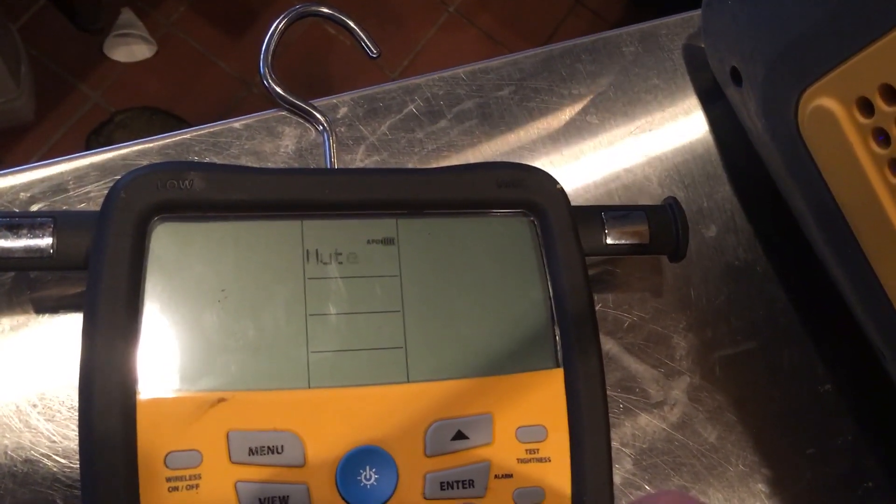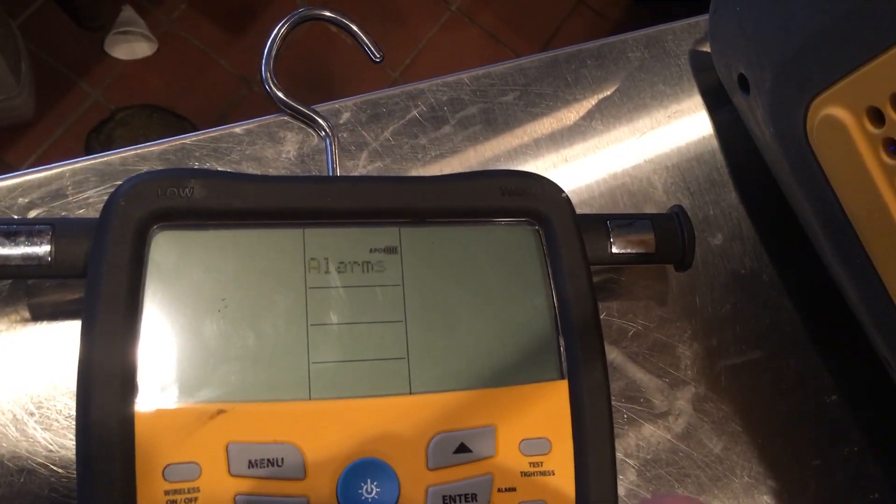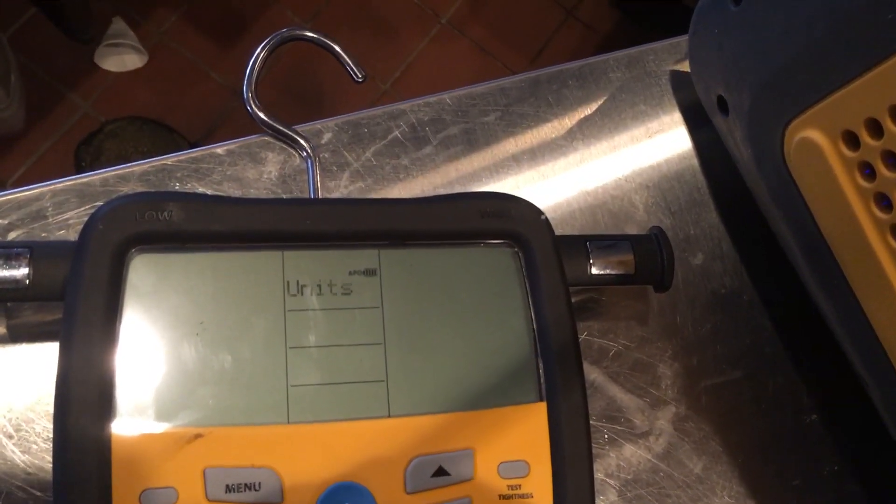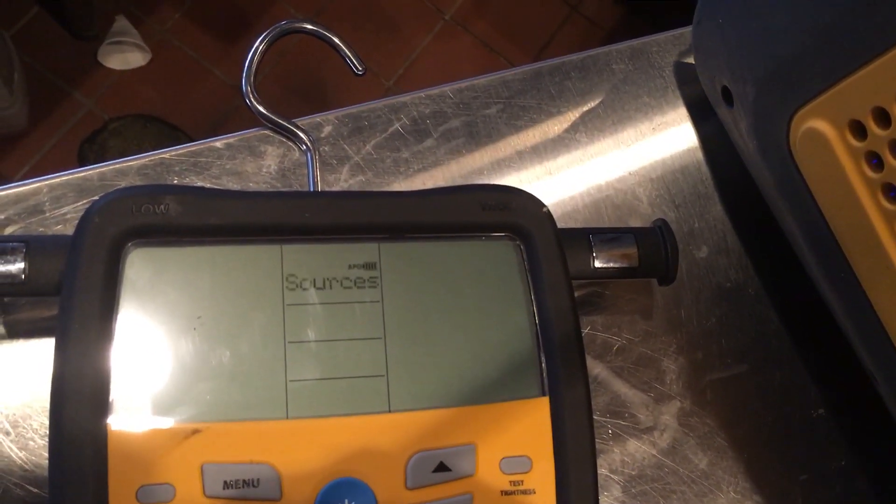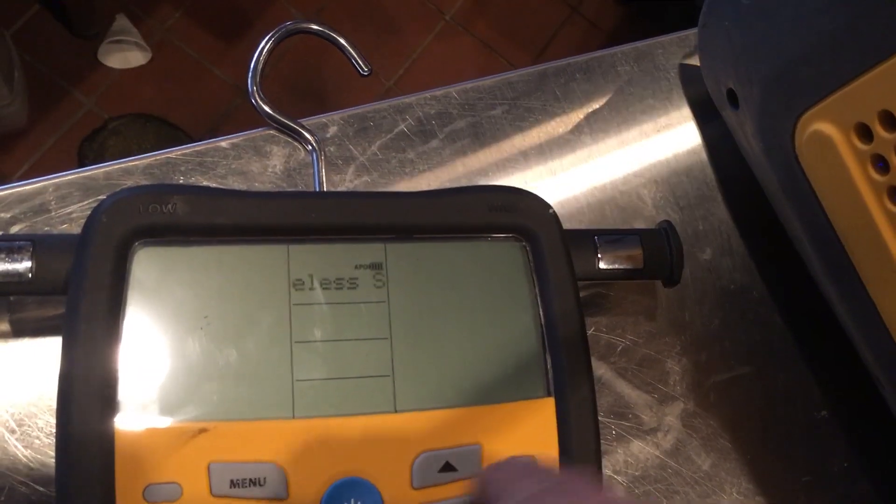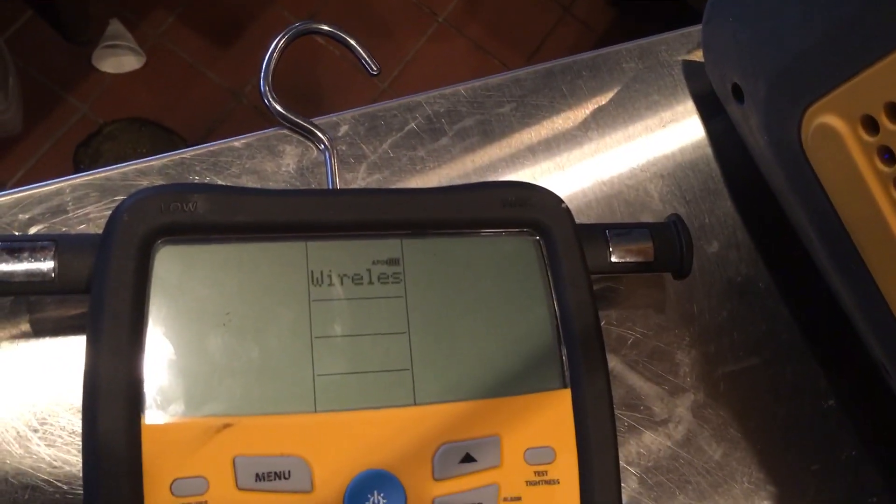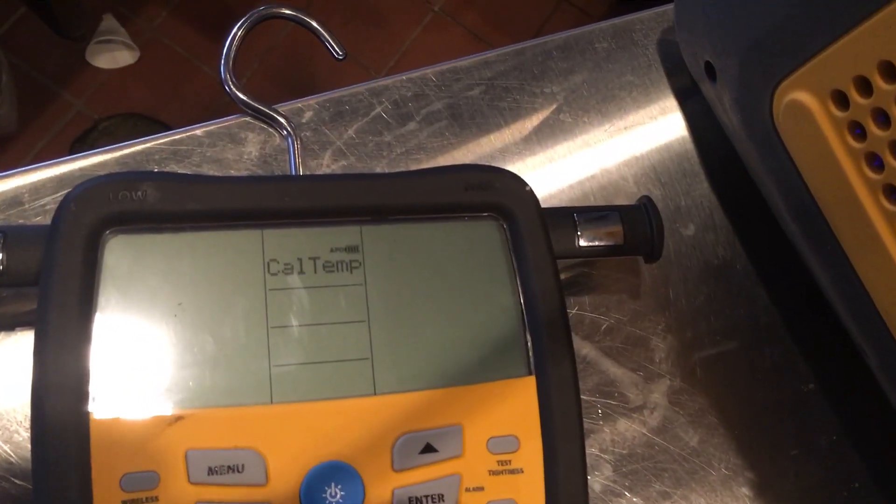Backlight, mute, vac alarm. You can set where it's gonna start beeping and flashing under a vacuum. Units, target superheat sources, wireless. You can attach your JobLink wireless temperature clamps. Calibrate temp.